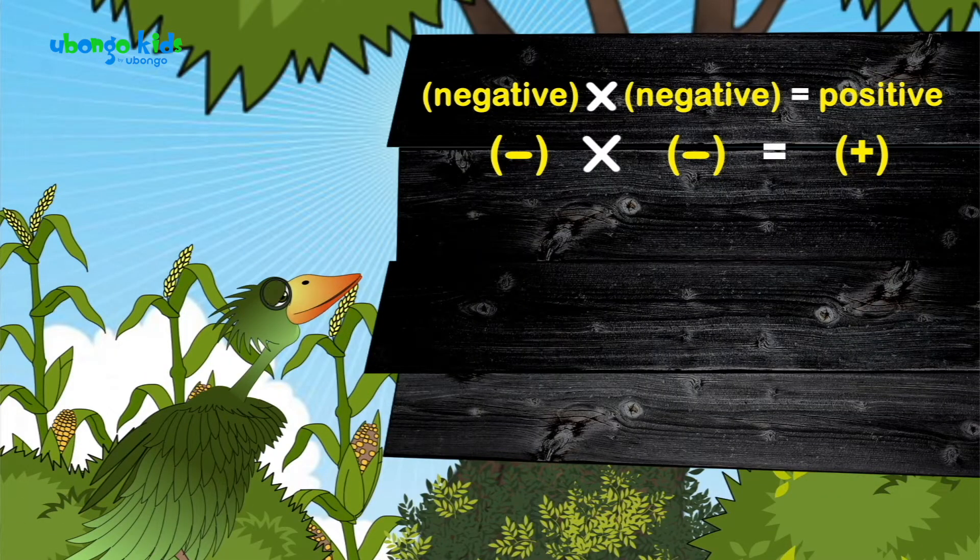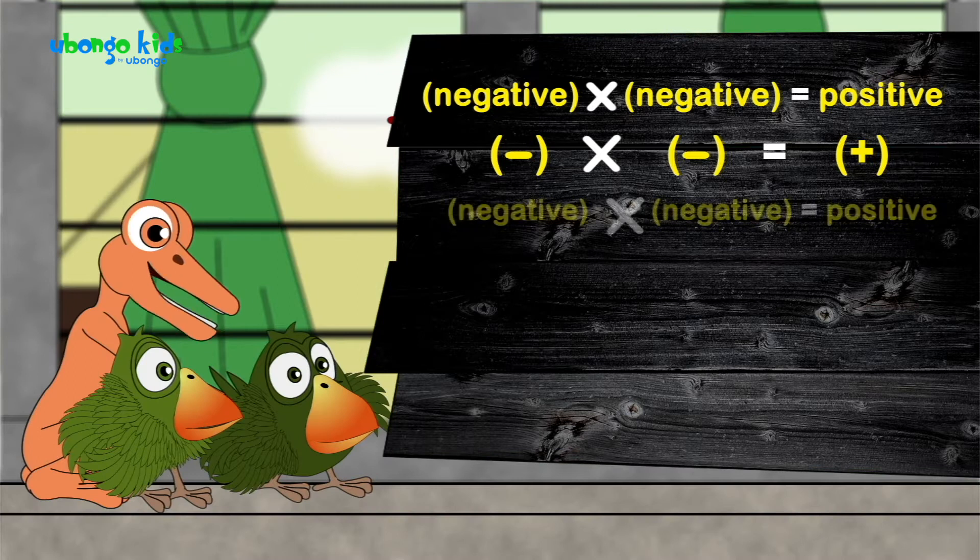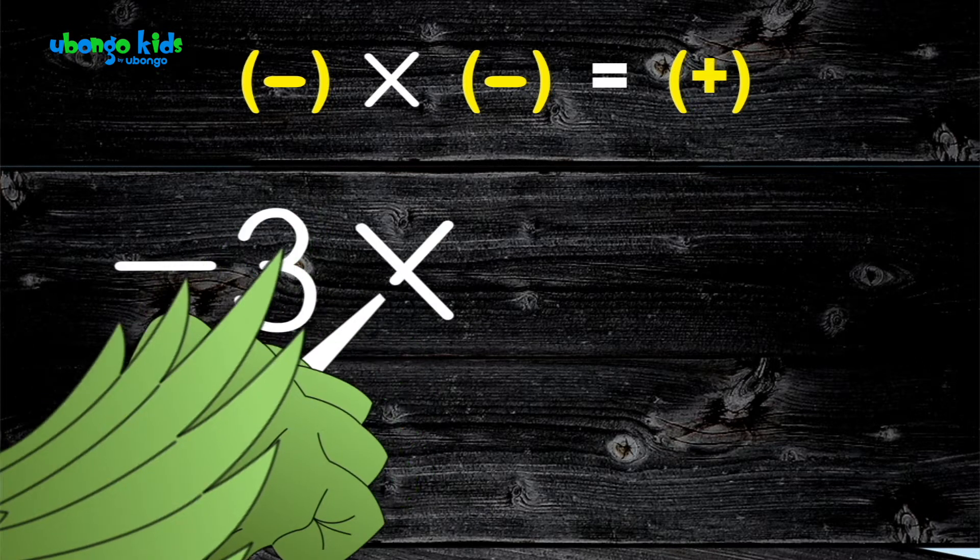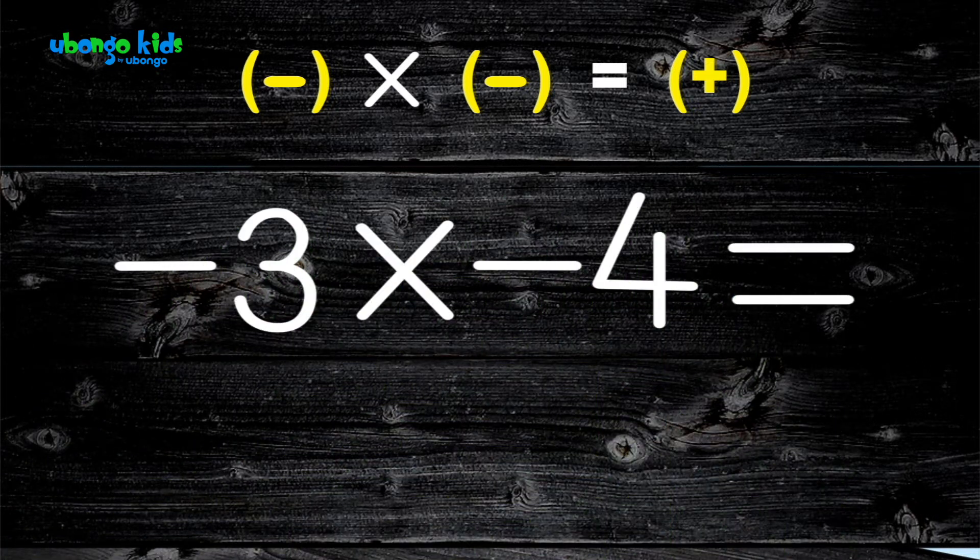A negative times a negative. In Kiswahili, we'd say hasee. That means negative. For example, negative three times negative four.